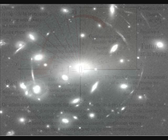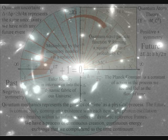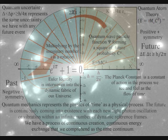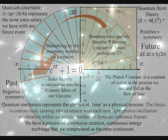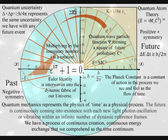This video will place Euler's identity within the fabric of space and time. This will be quite easy to follow because the mathematics of this theory represents the dynamic geometry of a three-dimensional physical process. I will use diagrams to help explain how Euler's identity is at the heart of this process of continuous energy exchange that we see and feel as the continuum of time.